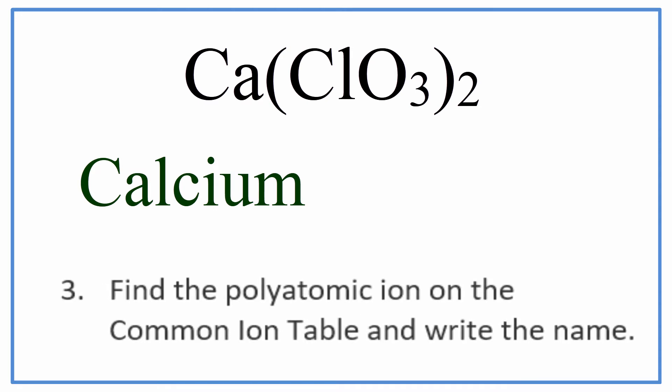Then, we're going to write the name for that polyatomic ion, that ClO3. Since it's a polyatomic ion, we need to look it up on a common ion table. You'll usually be given one.